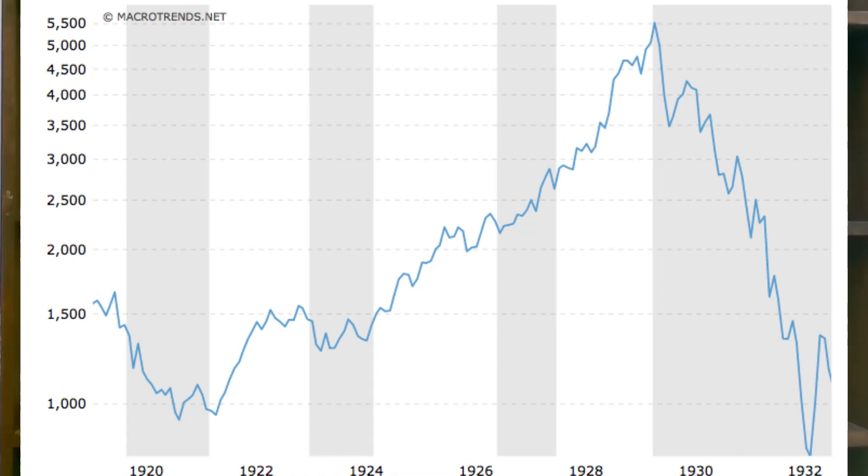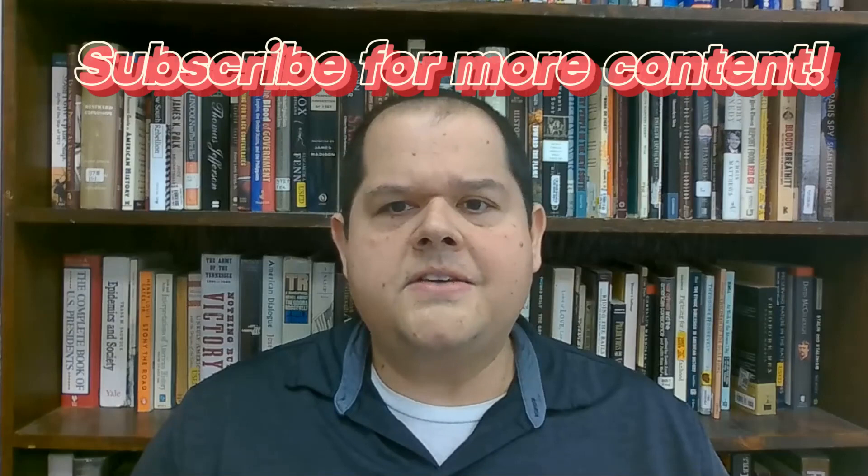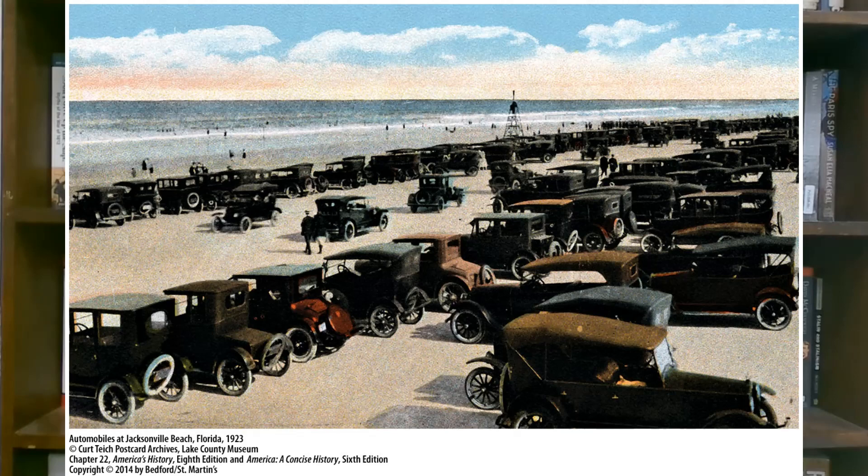The 1920s saw substantial economic growth and an increase in overall American wealth relative to the rest of the world. Several factors were at play, including the decline of European production following a destructive and costly war, the returning payments of United States loans to European countries during World War One, innovations in production techniques, and easier access to credit for American businesses and consumers.